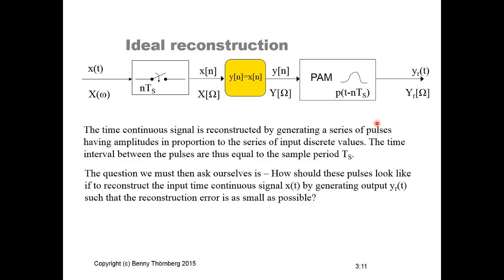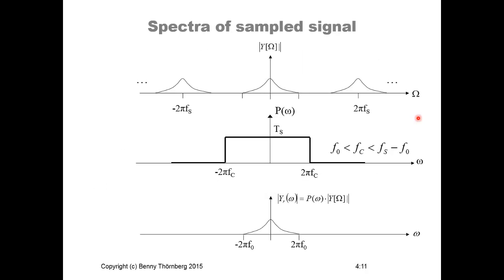The question we must ask is: how should the pulses look if we want to reconstruct the input signal into Y_R(t) with the minimum amount of error? On the upper graph we see the frequency spectrum of a sampled signal — the input signal spectrum before sampling — and the output spectrum of the sampler is repeated with a period equal to the sampling frequency, according to the Poisson summation formula.